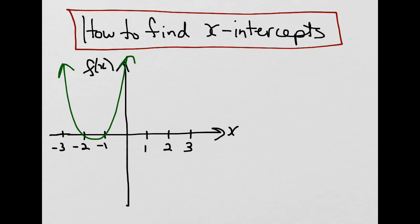In this case, the graph crosses the x-axis at negative 2 and negative 1, or the points (-2, 0) and (-1, 0).